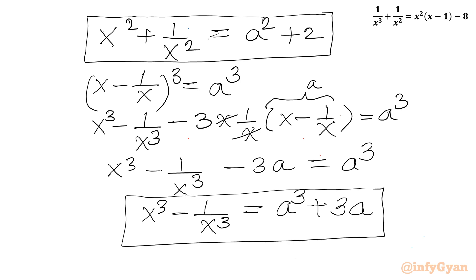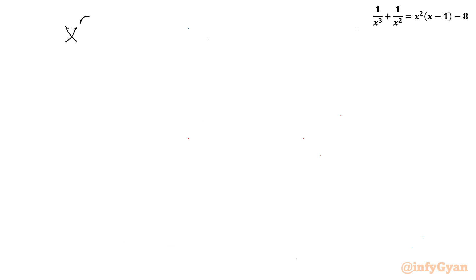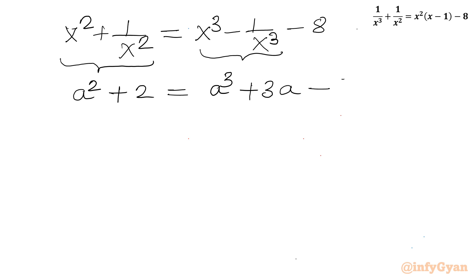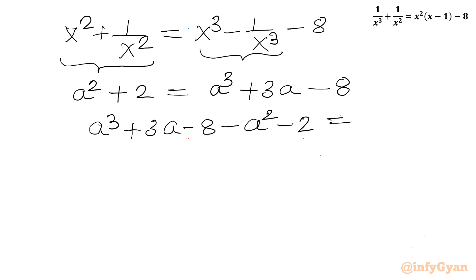Now we can write our original equation substituting the values in terms of A. We have x squared plus 1 over x squared equal to x cubed minus 1 over x cubed minus 8, which becomes A squared plus 2 equal to A cubed plus 3A minus 8. Taking all terms to the RHS gives A cubed minus A squared plus 3A minus 10 equal to 0.